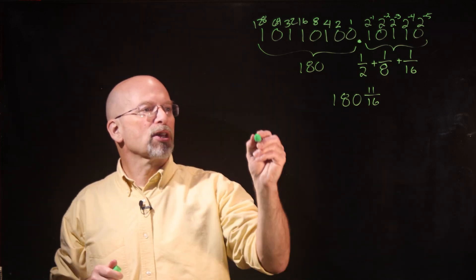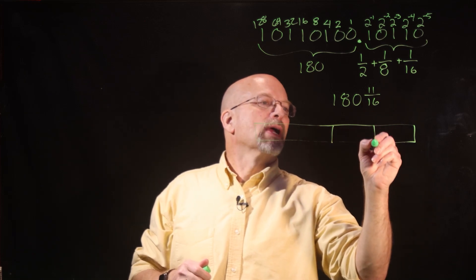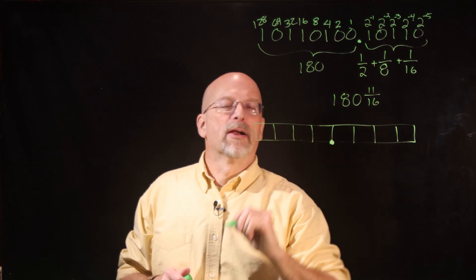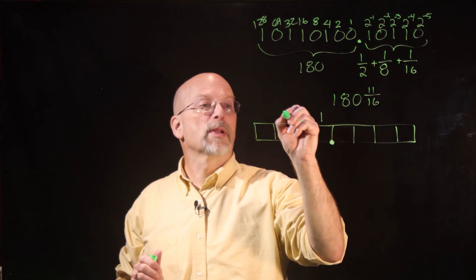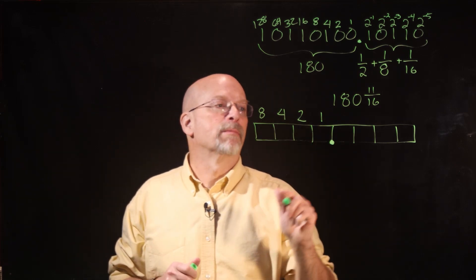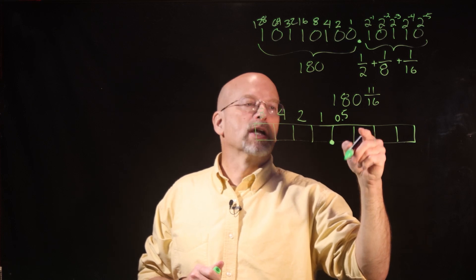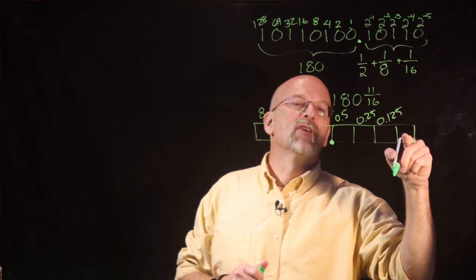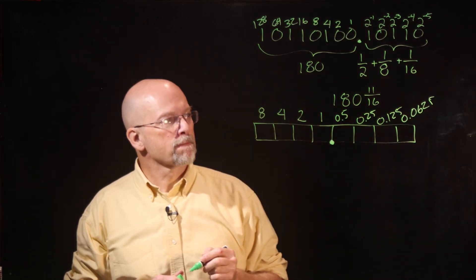Now let's go the other way. We'll draw a little diagram with a binary point in it. Everything to the left is increasing powers of two: ones, twos, fours, eights — so the largest value we can represent with those digits is fifteen. To the right: one-half (0.5), one-quarter (0.25), one-eighth (0.125), and one-sixteenth (0.0625).